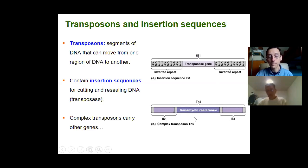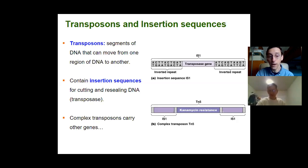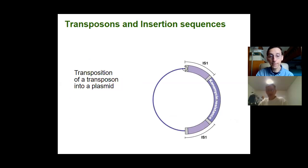Transposons are important because they can move a gene like kanamycin resistance into a plasmid, and then the plasmid can move into another cell through conjugation. That's why transposons are important — they can move genetic information from one region of the DNA to another and from one part of the cell to another, making it more likely for resistance genes to spread in the population.